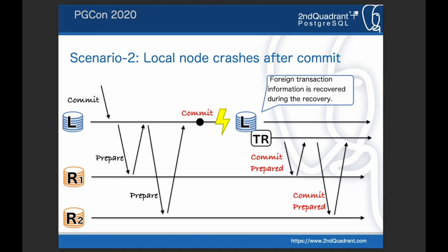In the next scenario, the local node prepared foreign transactions on two remote nodes and did the local commit, but then the local node crashed. During restart, the local node recovers the foreign transaction information. The key point is that all foreign transaction information was WAL-logged before preparing on the remote nodes, so it can be recovered during recovery. The Transaction Resolver then launches and sends commit-prepared messages to all remote nodes. As a result, all transactions are successfully committed. Note that in this case all transactions should be committed — they should not be rolled back — because the local transaction on the coordinator is already committed.